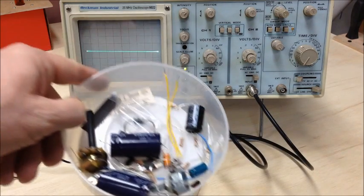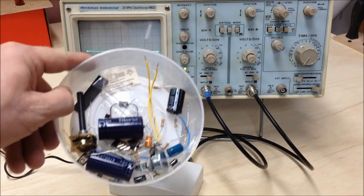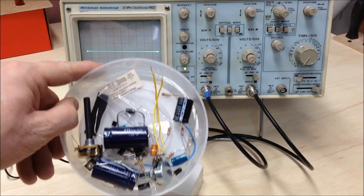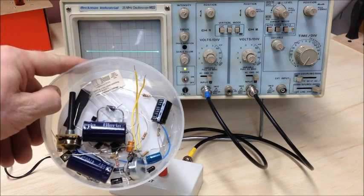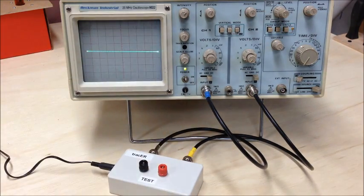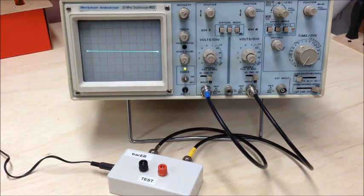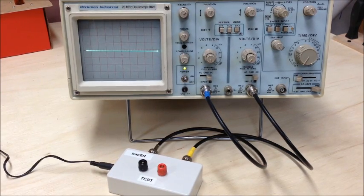I've rummaged up a bucket of test components. As you can see there's all sorts of stuff in there, rectifiers, capacitors, potentiometers, even some transistors. So what we're going to do is show you how to use this unit in conjunction with an oscilloscope.